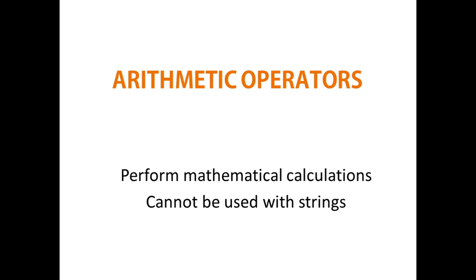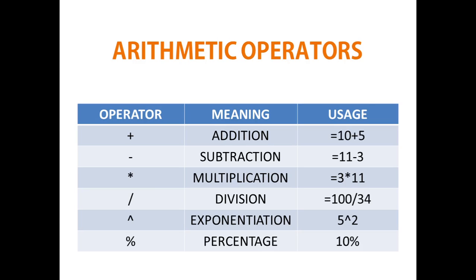There are three kinds of operators in Excel. First, you have arithmetic operators. These operators perform mathematical calculations and they cannot be used with strings, meaning text values. The arithmetic operators include addition, subtraction, multiplication, division, exponentiation (meaning 'to the power of' — for example, 5^2 means 5 raised to the power 2, or 5 multiplied by 5), and percentage, which converts a number into a percentage value.